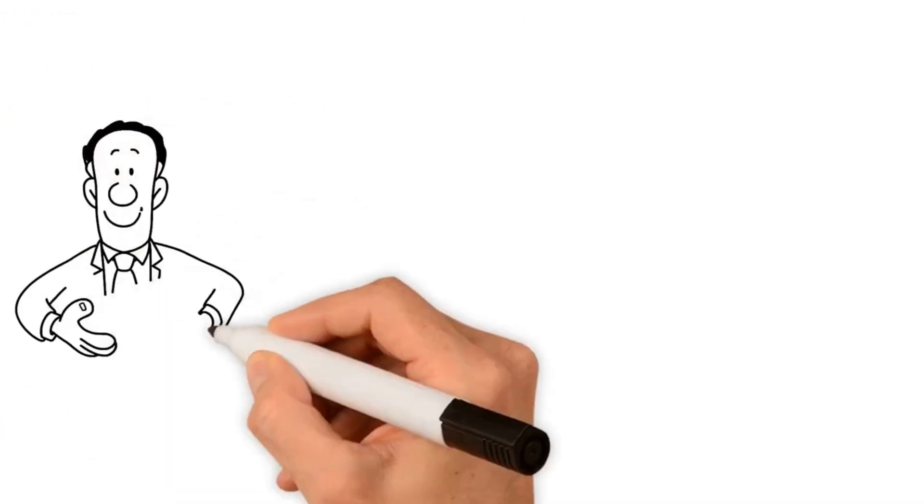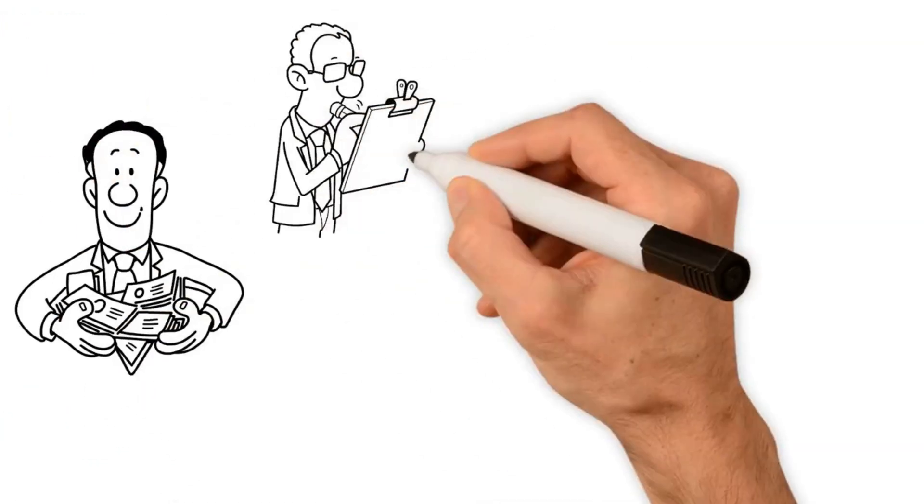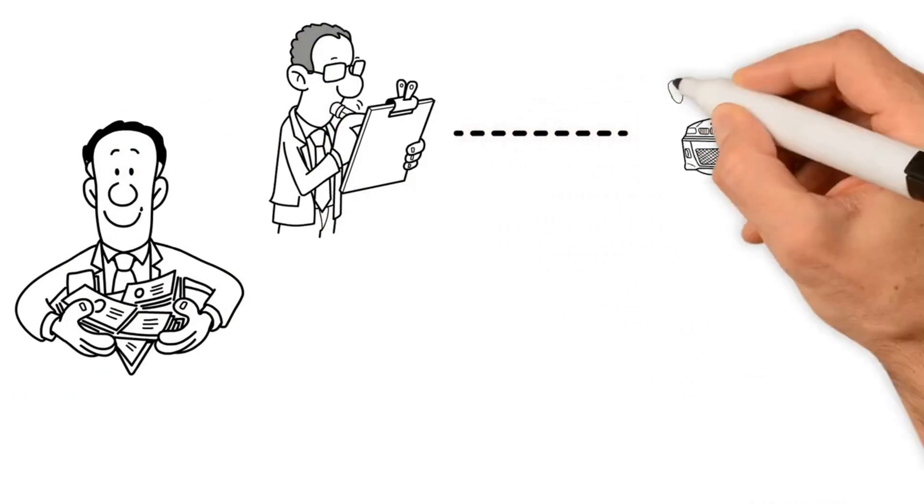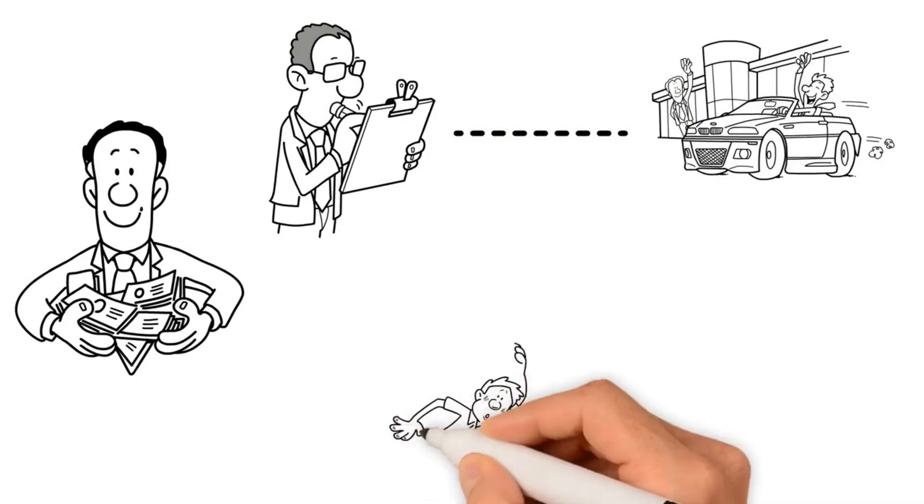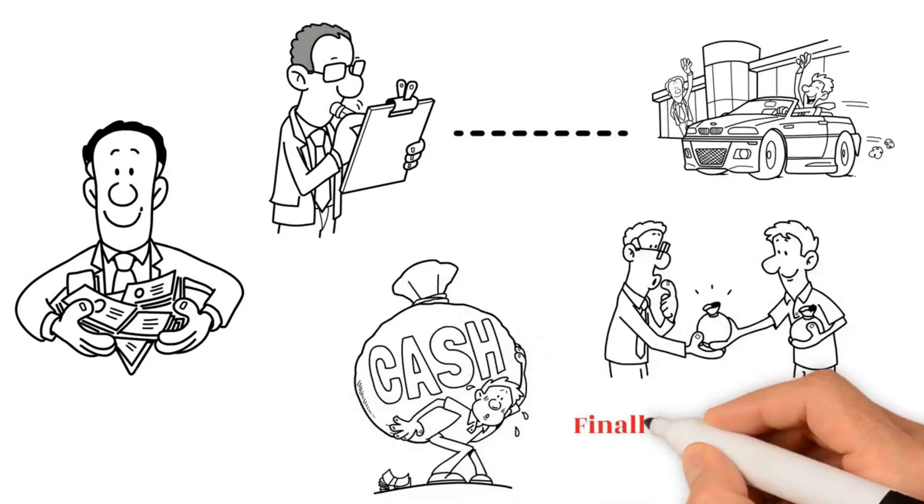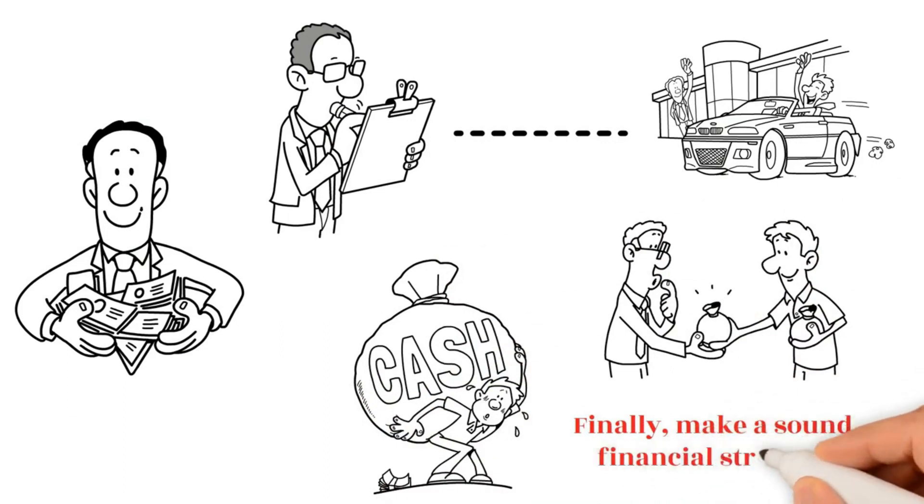To avoid the pitfalls of overspending, start by tracking the small expenses that pile up rapidly, then progress to monitoring the big ones. Consider your options carefully before adding additional loans to your payment schedule. Finally, make a sound financial strategy.